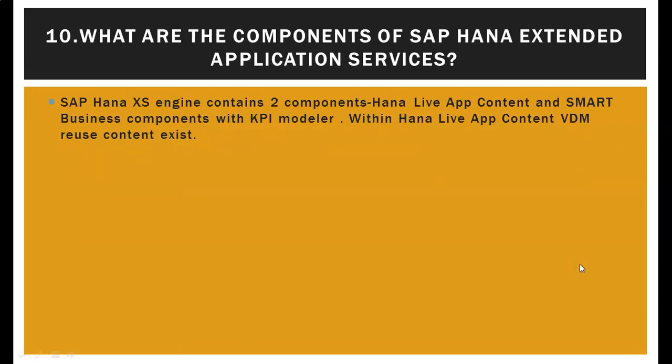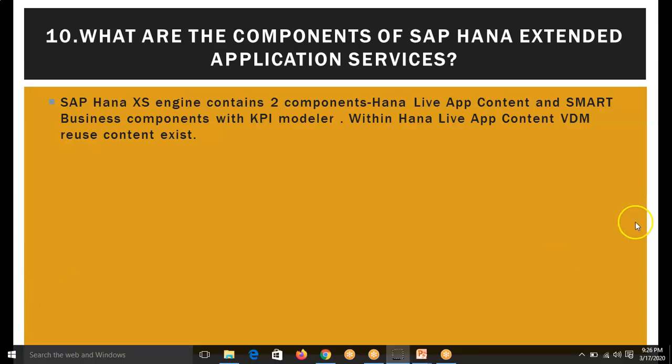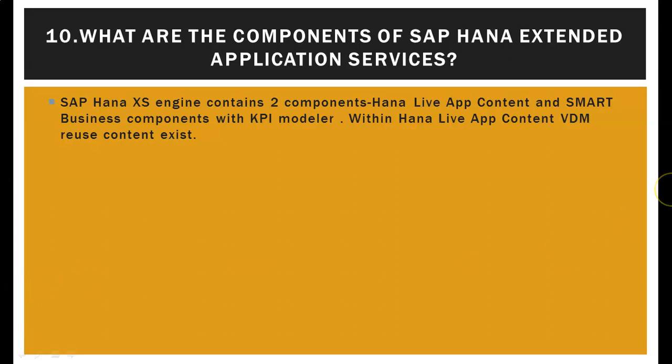What are the components of SAP HANA extended services? The SAP HANA extended services engine contains two components: HANA Live app content and smart business components with KPI Modeler. Within HANA Live app content, the VDM reuse content exists.